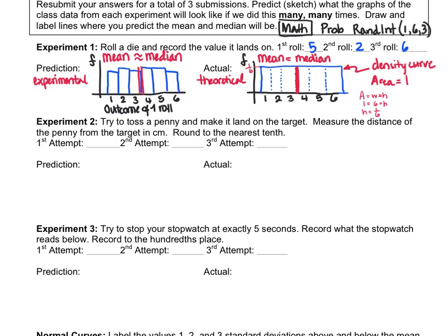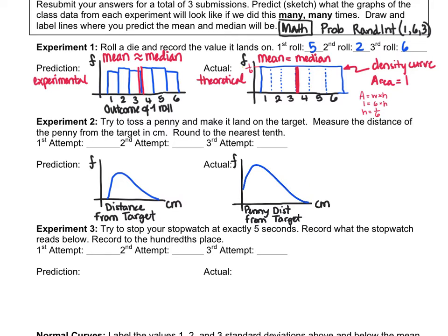For the next experiment, we would try to toss a penny and make it land on a specific target, then measure the distance from where the penny landed to the target in centimeters, rounding to the nearest tenth. If you're pretty good at tossing accurately, the distances between your target and where the penny actually landed would be pretty small. That means most of the frequency would end up on the left — higher frequency on the left because those are small values — and there would be a few that are far off target on the right. So the prediction of what the distribution looks like would be right skewed. All distances will be positive or zero, since we can't have negative distances in centimeters.